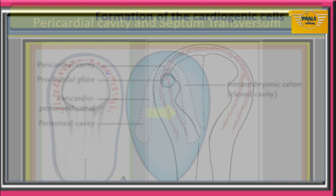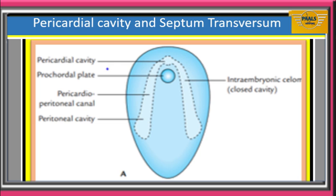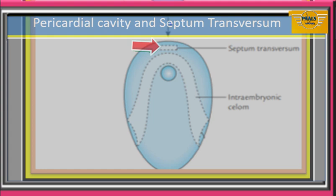Above the cardiogenic region and prochordal plate is the part of the intraembryonic cavity that will later form the pericardial cavity. Above it is another part of the intraembryonic cavity that will give rise to the septum transversum, which will form the central tendon of the diaphragm.